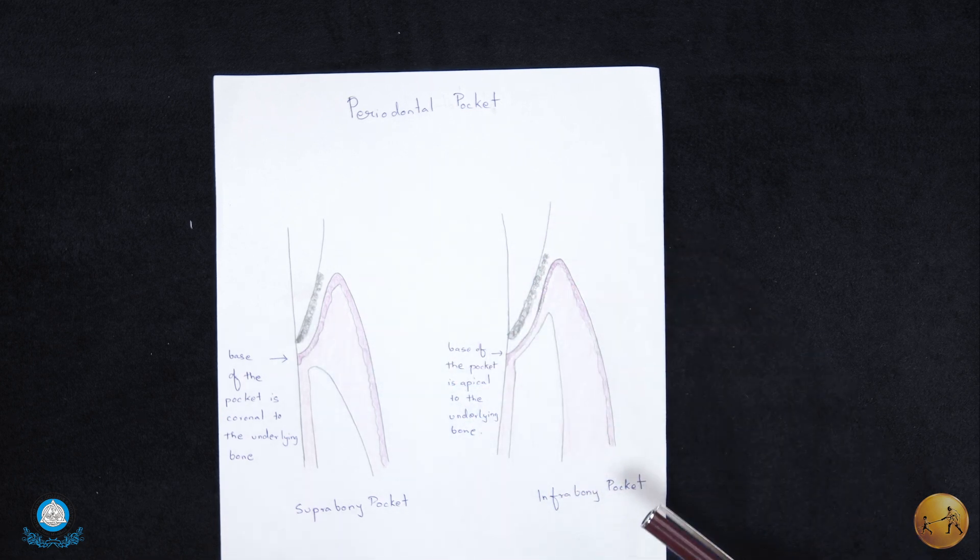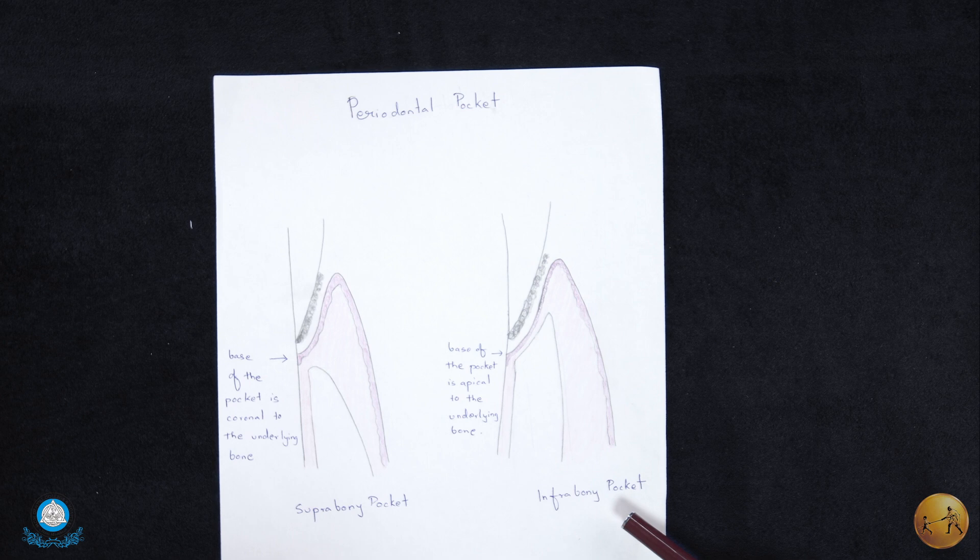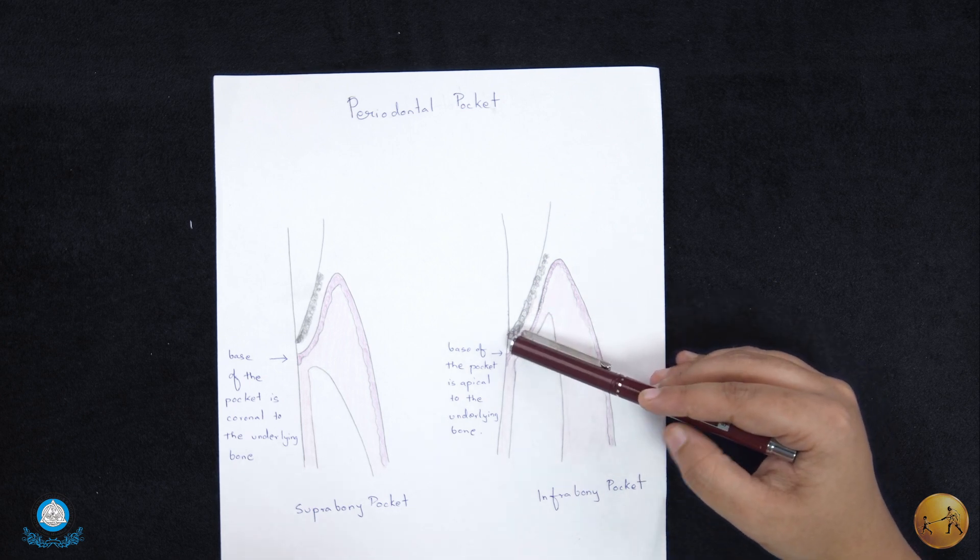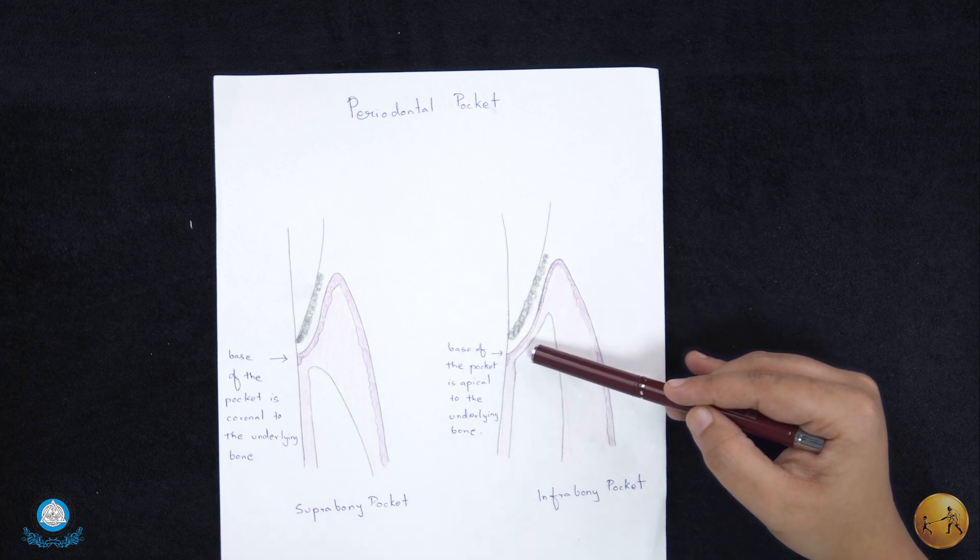Whereas infrabony pocket, also known as intrabony pocket, here the base of the pocket is apical to the underlying bone.